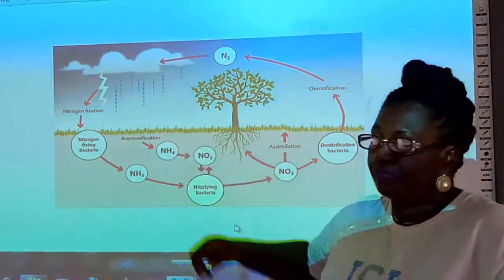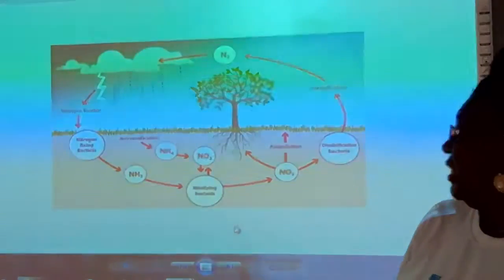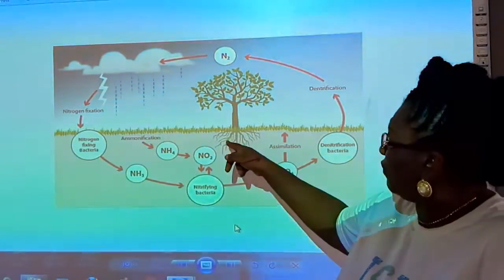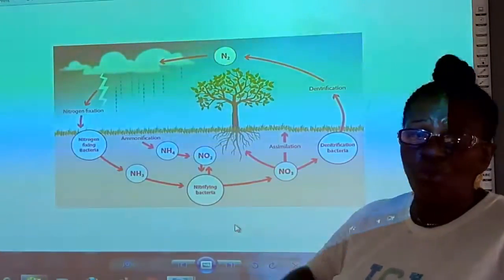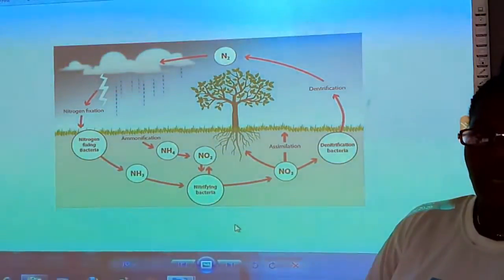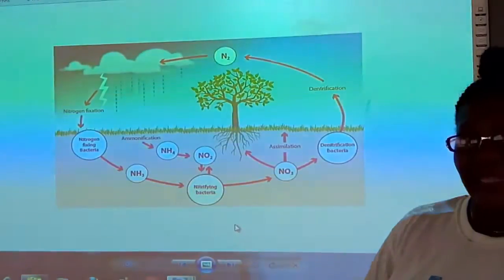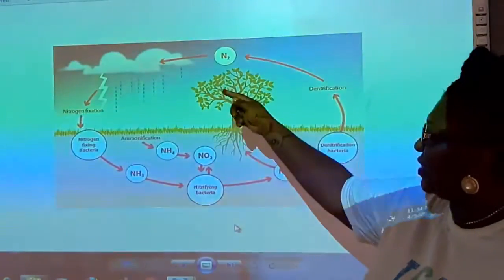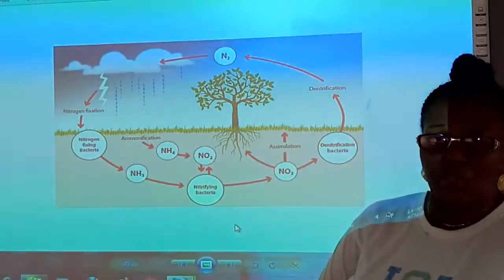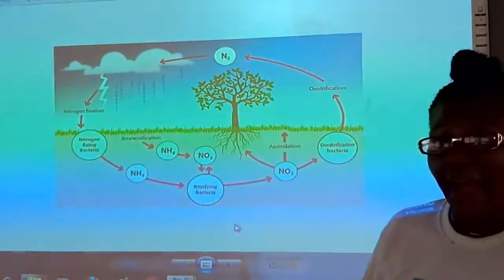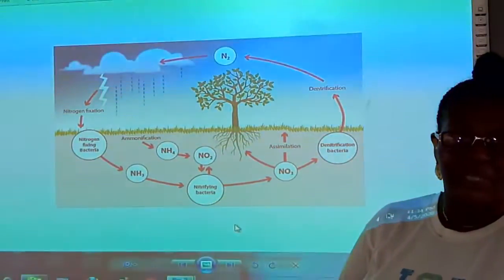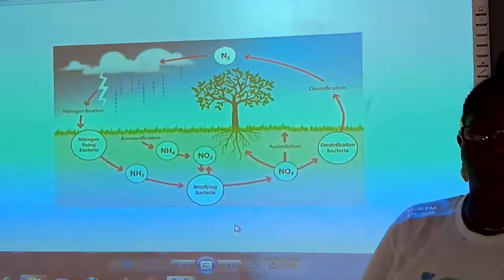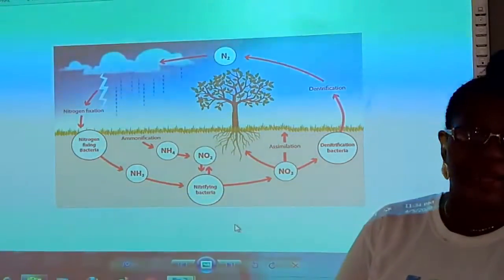It's also possible that you have nitrogen fixing bacteria in the root nodules of leguminous plants. That is a symbiotic association as we know. It's able to fix that nitrogen into the soil. We also have free living ones that can do the same job like azotobacter and clostridium.